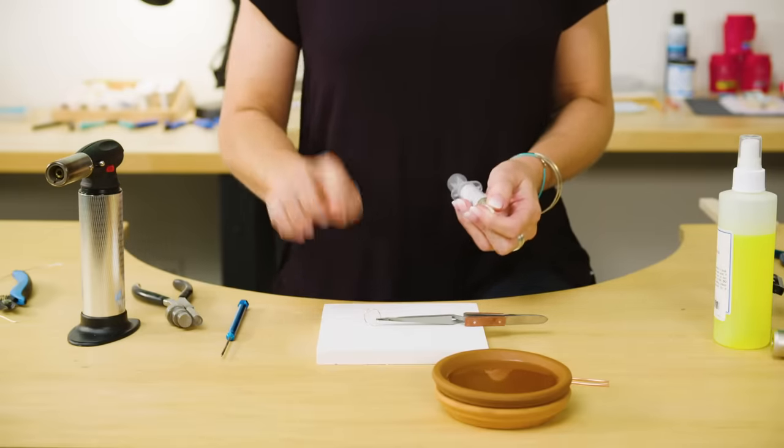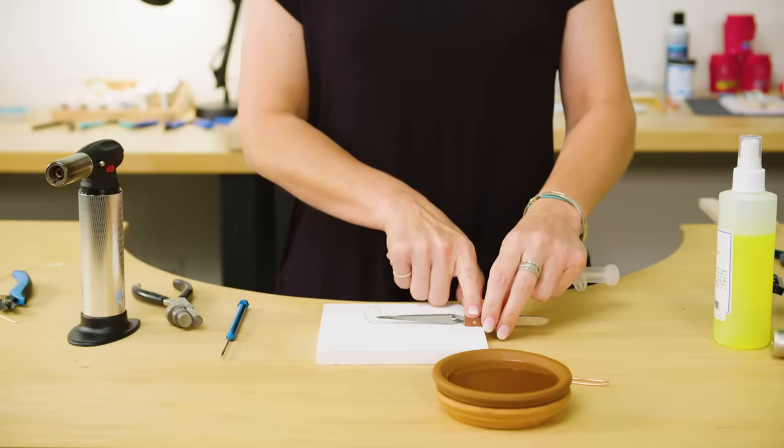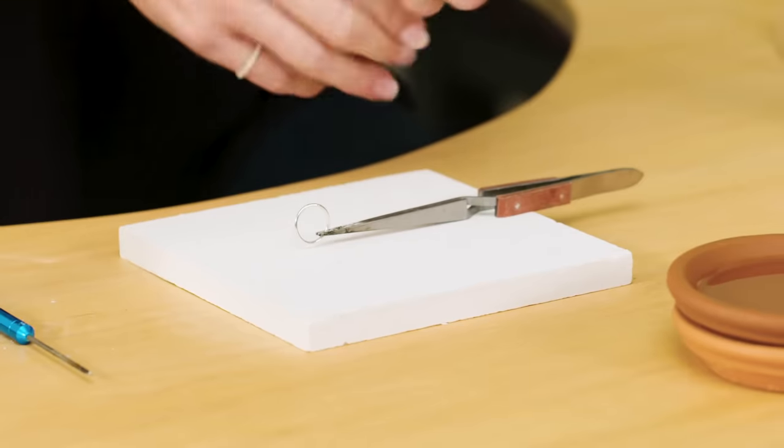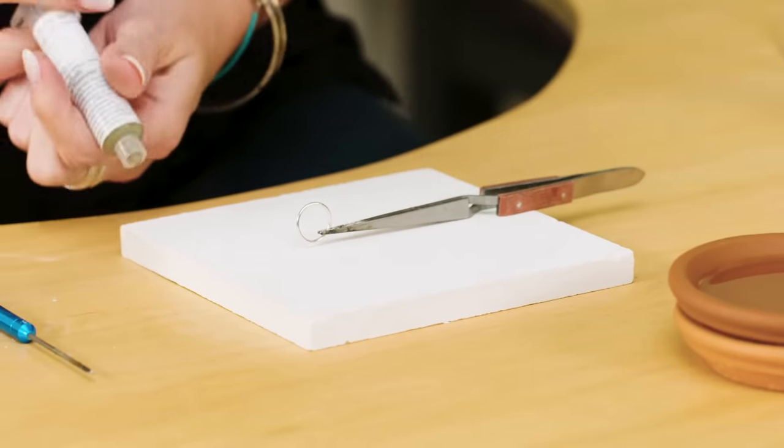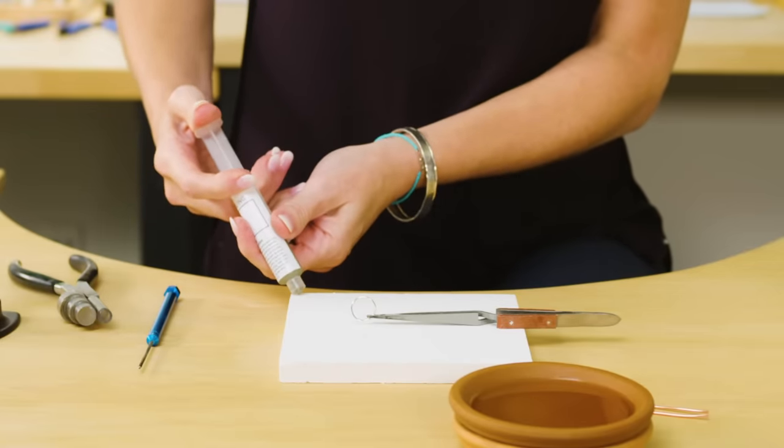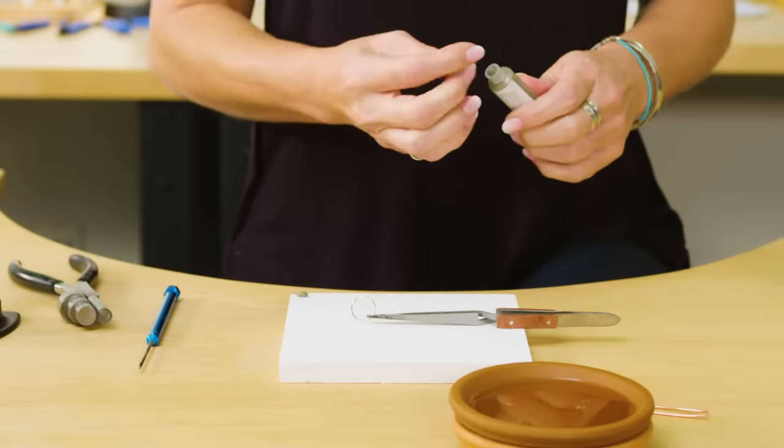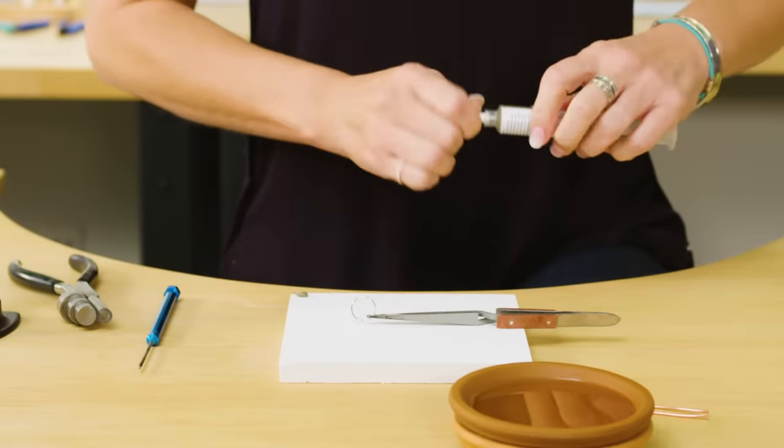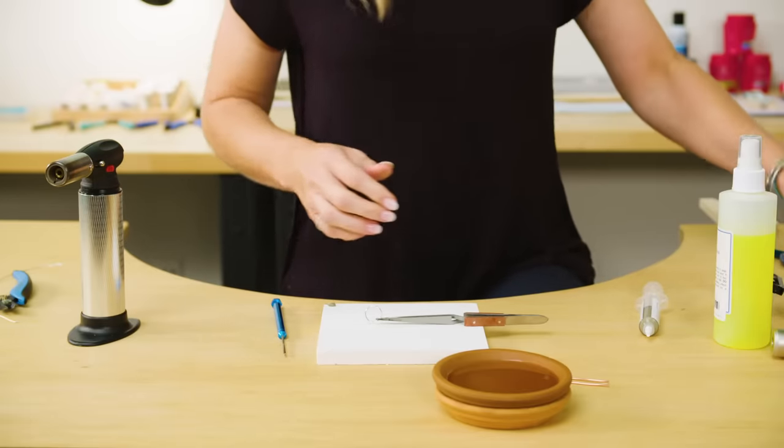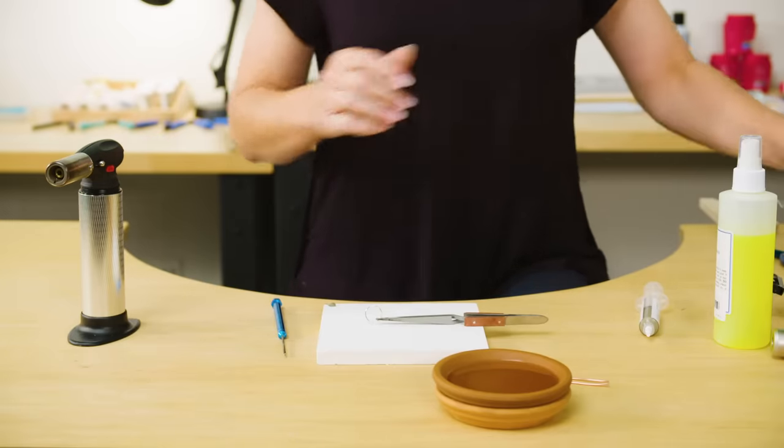I've got my ring made, my joint nice and flush, and I have it set up in my third hand, my cross-lock tweezer here, to make sure it does not burn me. Then I'm going to take some of this paste solder, and I always squeeze a little bit out onto the corner of my soldering board before I do anything else. I've got my pick ready, and I'm just going to move all my tools out of the way so I don't get things hot while I work.